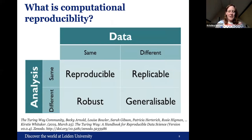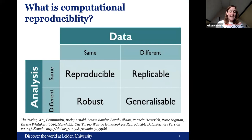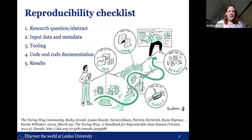I use this figure from the Turing Way, a handbook for reproducible data science. We talk about a reproducible study when the analysis and the data are the same, and a replicable study when the analysis is the same but the data is different. Robustness comes from a different analysis on the same data, and we generalize when you have a different analysis on a different data set. This is a sort of overview checklist to think about, also from the Turing Way and from my own experience in reproducible science.